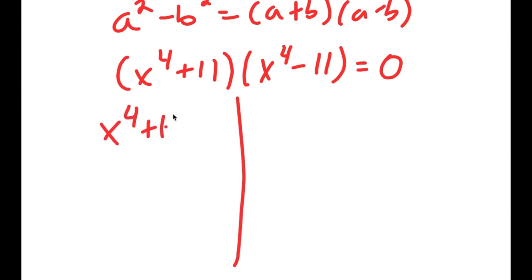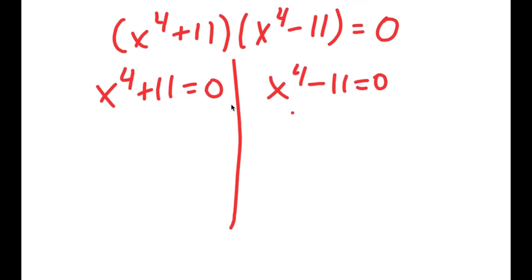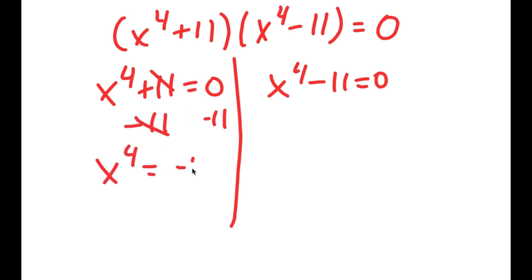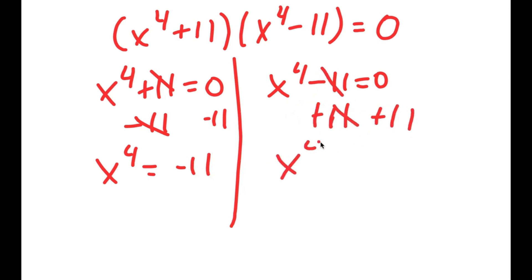This gives us x to the power of 4 plus 11 equals 0, and x to the power of 4 minus 11 equals 0. For x to the power of 4 plus 11 equals 0, I subtract 11 on both sides and get x to the power of 4 is equal to negative 11. For x to the power of 4 minus 11 equals 0, I add 11 on both sides and get x to the power of 4 is equal to 11.